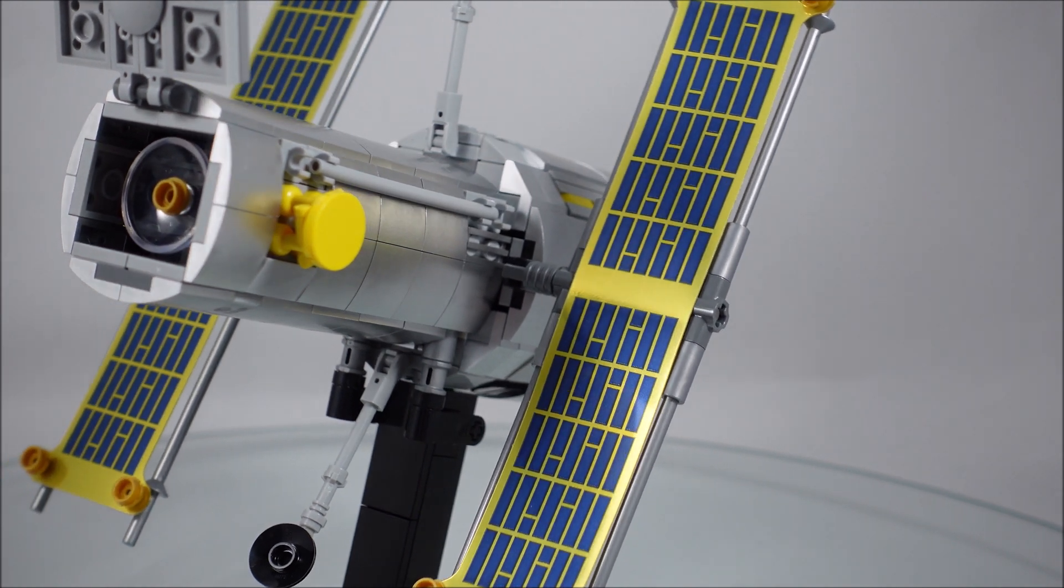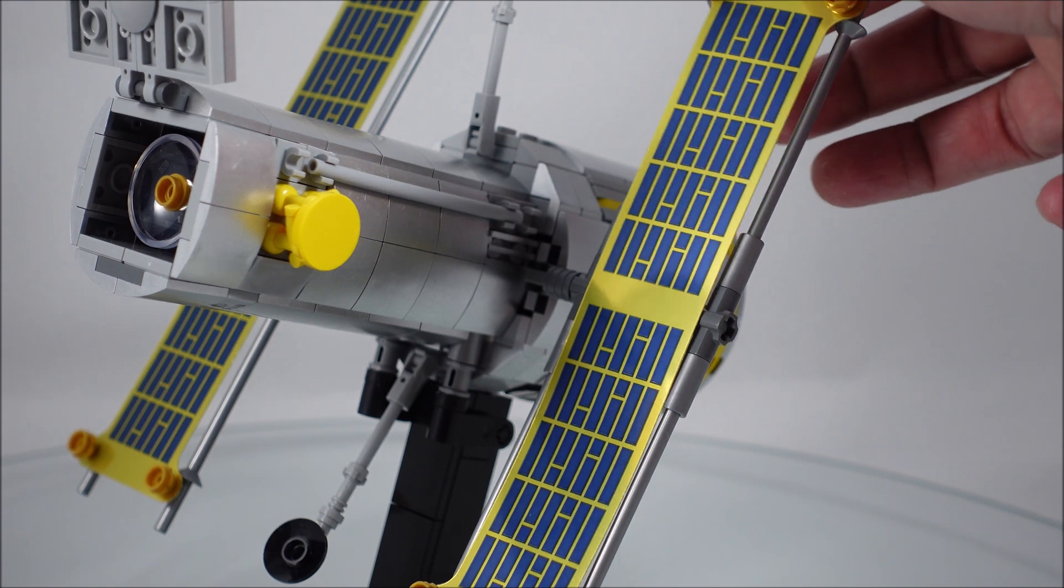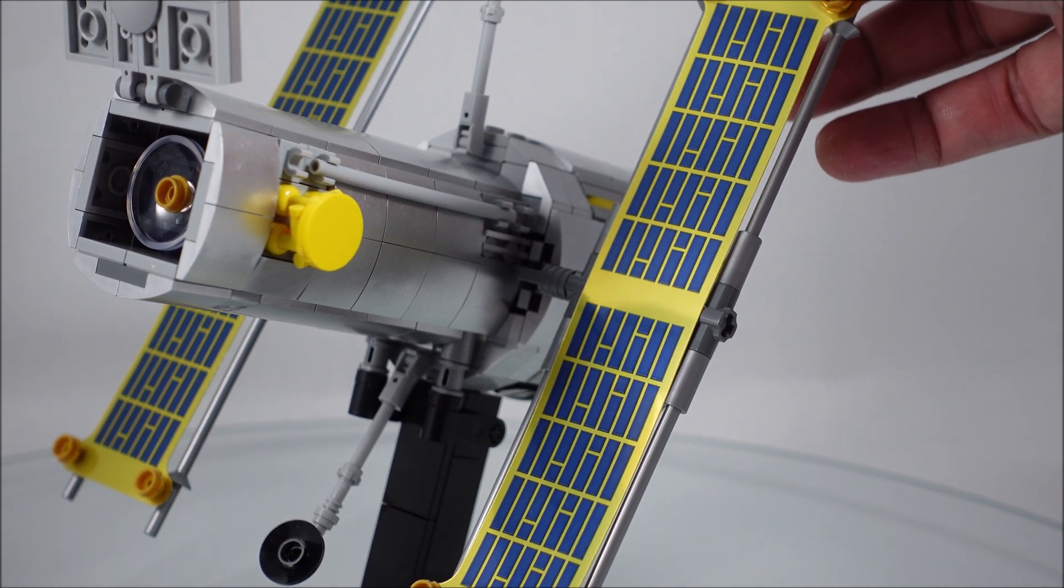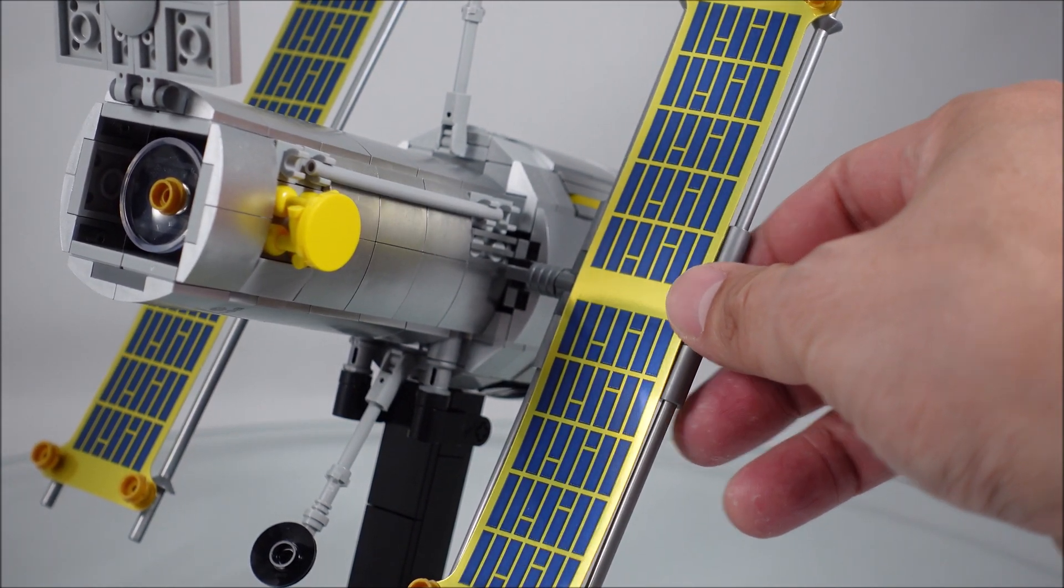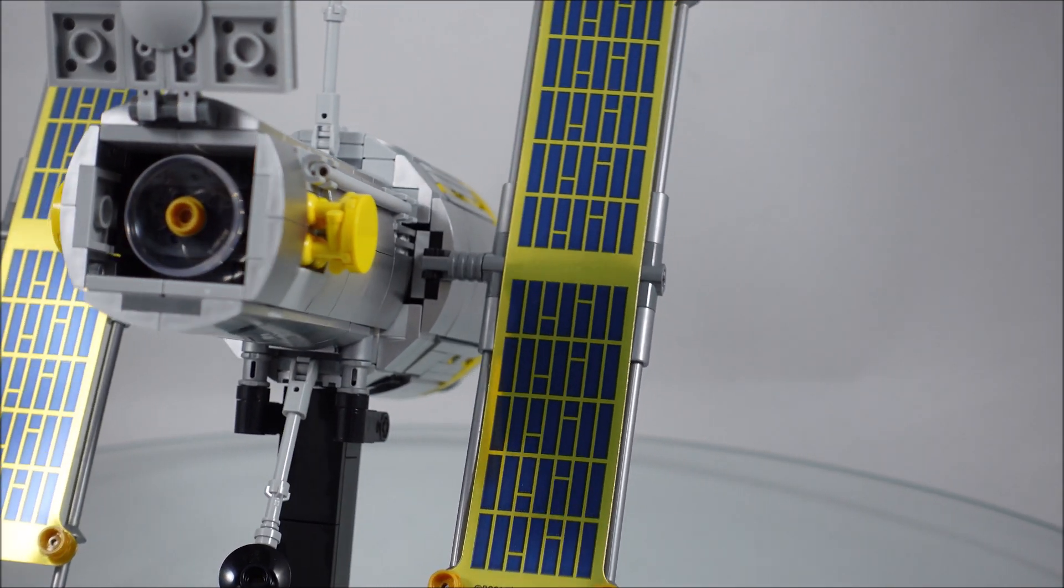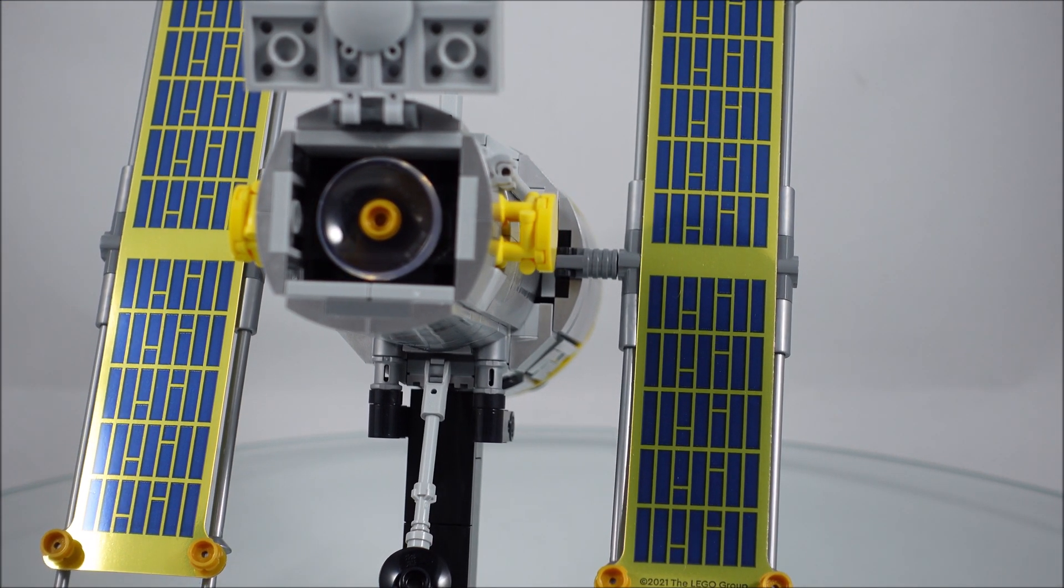But either way, the other parts of the set itself, I love these solar arrays with this sort of vinyl material. They are flexible, which is good. And I guess in real life, they do roll out to form that whole sort of sheet.